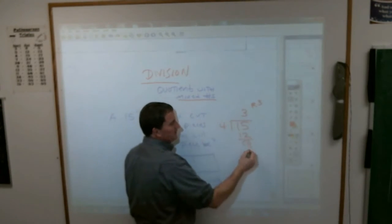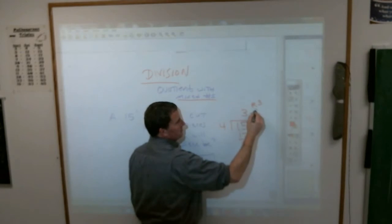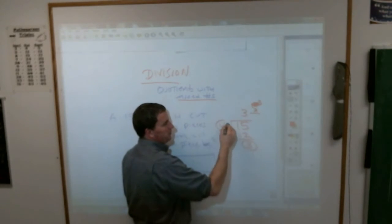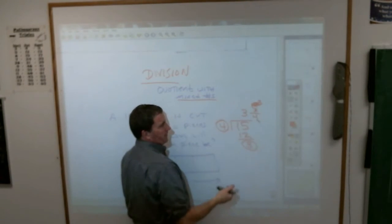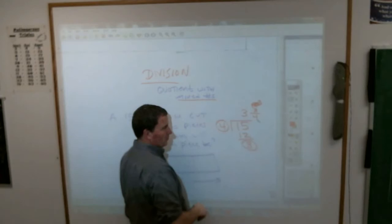What you do is you take the remainder, it's the top of the fraction, and whatever number you are dividing by is the bottom of your fraction.